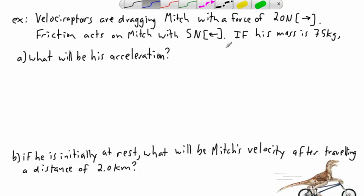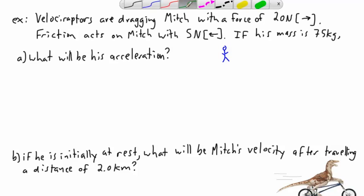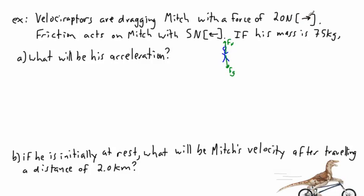To solve this, let's first do a free body diagram. I've got a downward force of gravity and an upward normal force — those cancel each other out, so no problem there. I'm also being given an applied force of 20 newtons to the right, so I'll draw an arrow to the right for that.